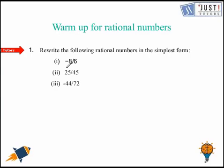So here they are asking us to simplify these rational numbers. We can simplify -8/6 by dividing both numerator and denominator by 2, which gives us -4/3. 25/45 can be simplified by dividing numerator and denominator by 5, which gives 5/9.